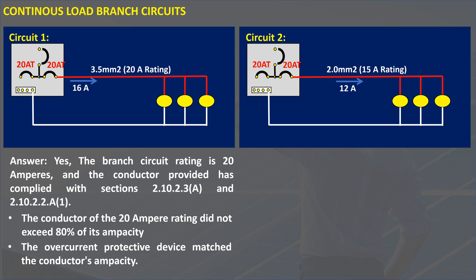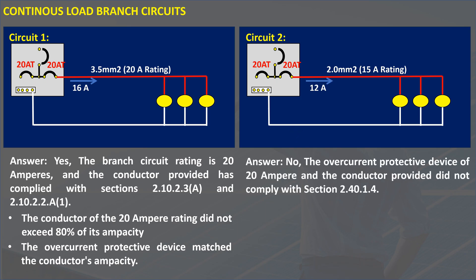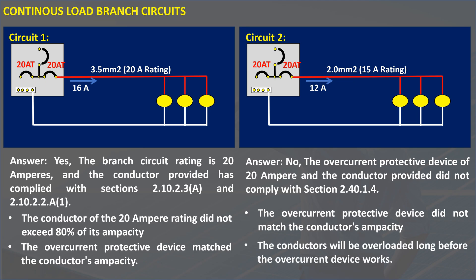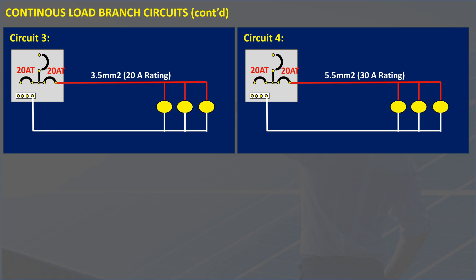How about circuit 2? A 12 amperes continuous load is connected to a branch circuit rated at 20 amperes with a conductor rated at 15 amperes. Is this circuit compliant with the code? No. The overcurrent protective device of 20 amperes and the conductor provided did not comply with Section 2.40.1.4. The overcurrent protective device did not match the conductor's ampacity. The conductors will be overloaded long before the overcurrent device works.